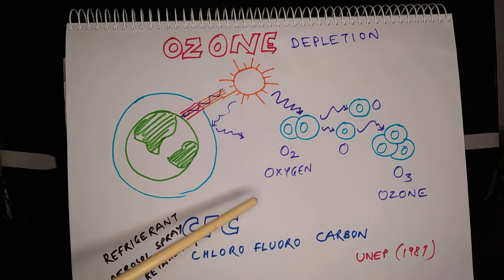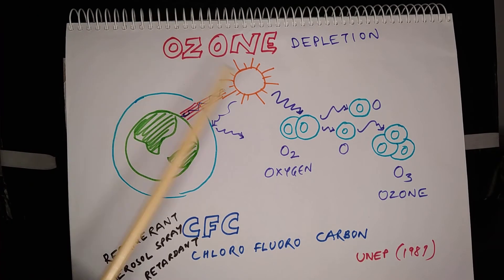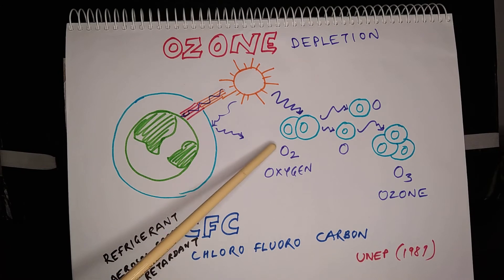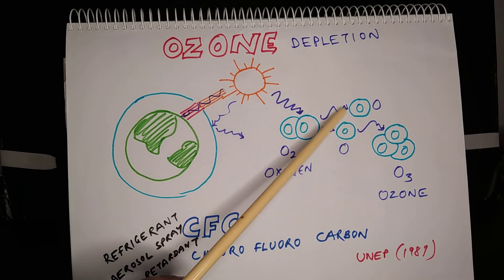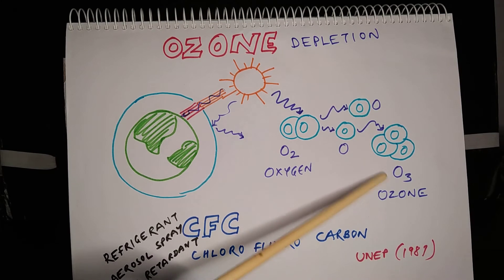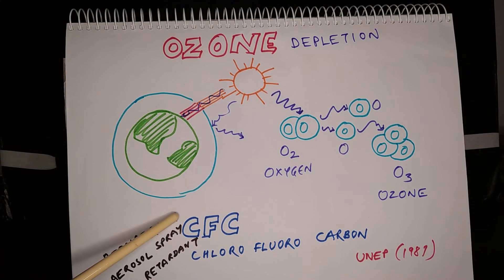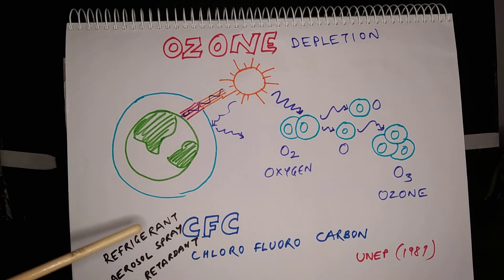Ultraviolet radiation can cause skin cancer and many other problems for living beings at the troposphere. Ozone is formed when ultraviolet radiation acts on oxygen — it breaks an oxygen molecule (O2) into two oxygen atoms. One of these atoms combines with another molecule of oxygen to form ozone, that is O3. This process goes on continuously. Because of the development of science and technology, we developed many products which use a group of compounds called CFC — chlorofluorocarbon. CFCs are used in refrigerants, aerosol sprays, and fire retardants.